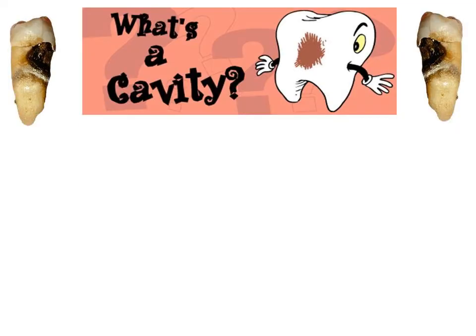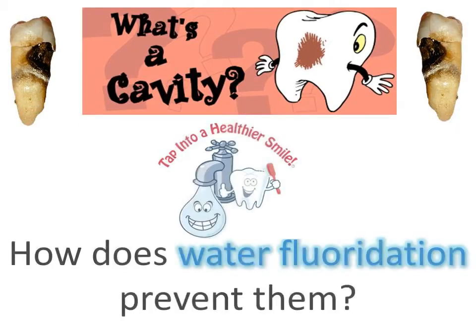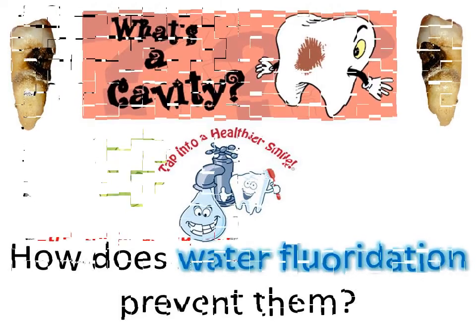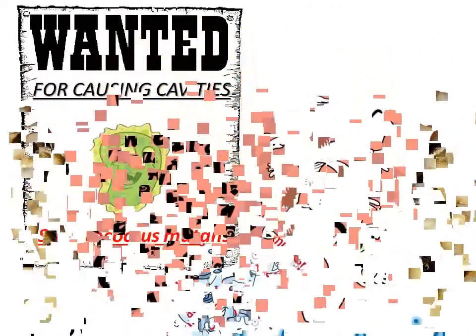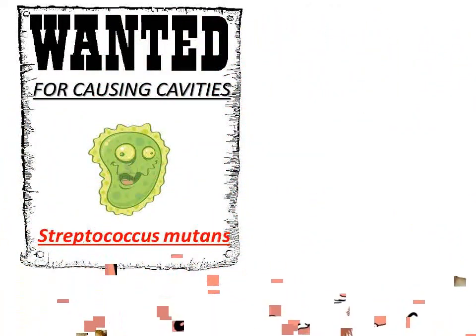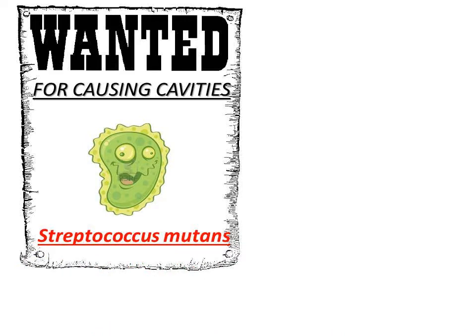So where do cavities come from, and how exactly does public water fluoridation prevent them? To answer these questions, we need to learn a bit more about the microorganism responsible: Streptococcus mutans.